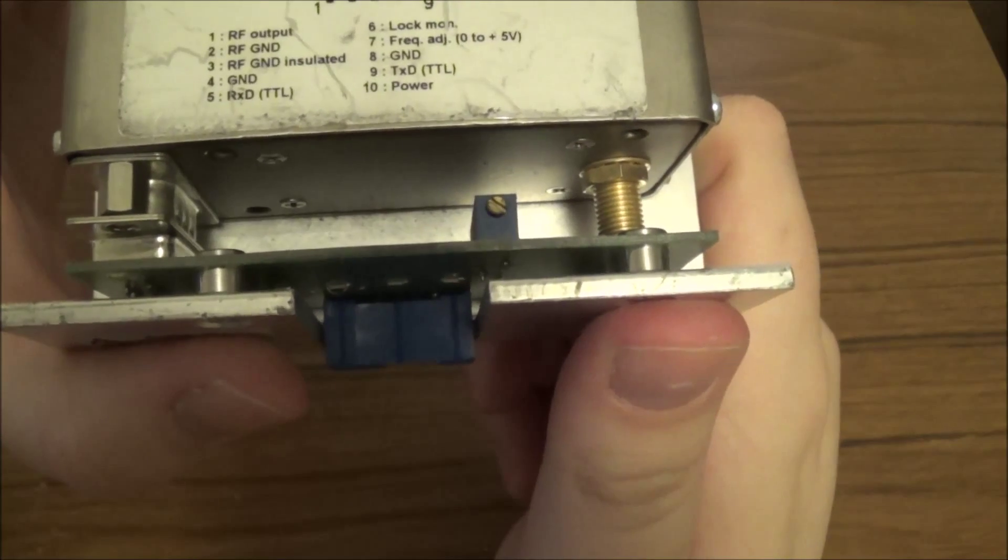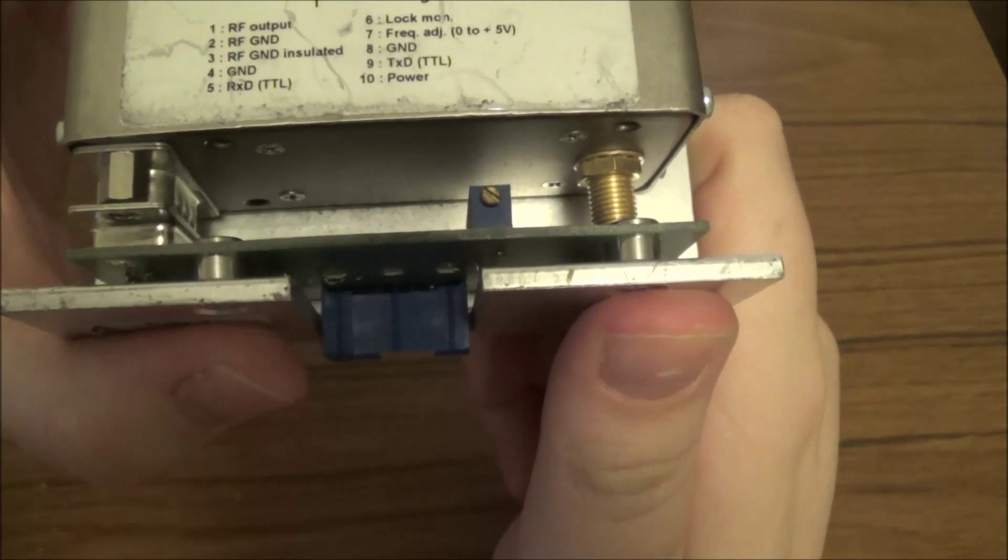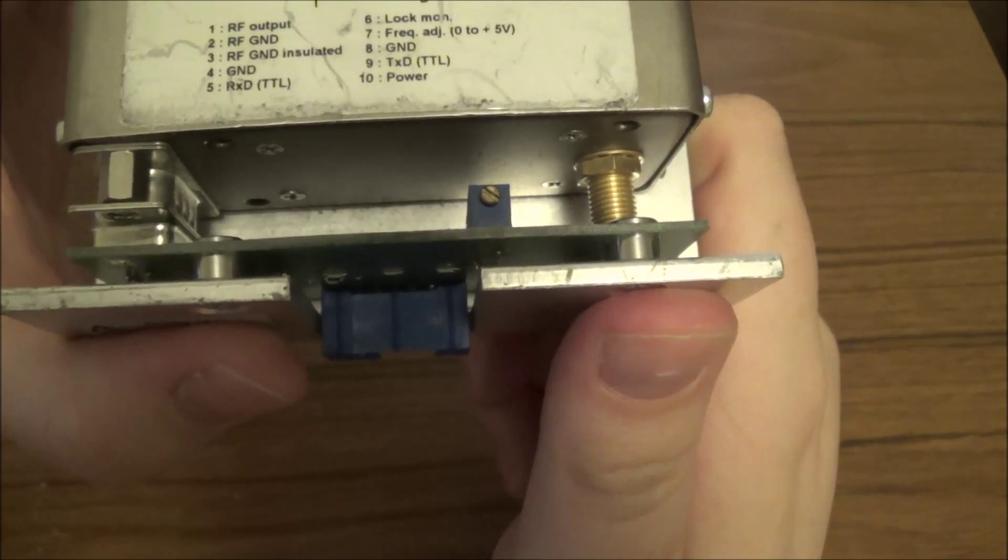The reason for this trim pot is that these rubidium standards aren't inherently accurate. They need to be calibrated against a better timing source like a cesium standard.